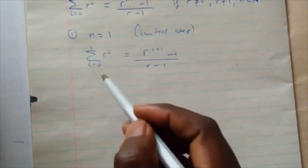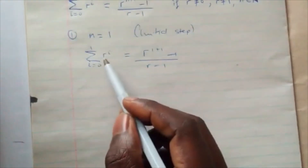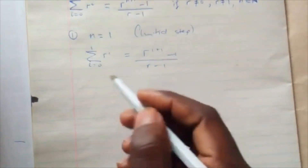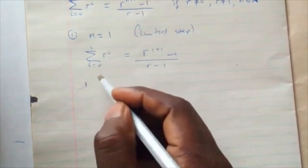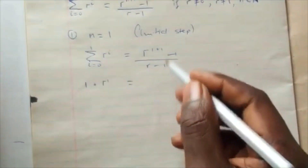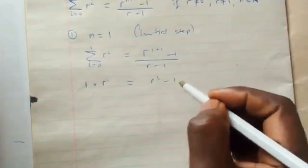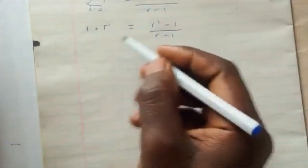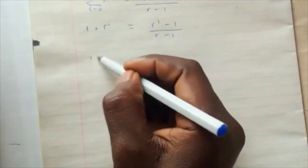The summation of r^i from i equals zero to one: first we plug in r^0 which is one, then plus r^1 which is r. On the right hand side we have r² minus one over r minus one. Simplifying the left hand side, it's already simplified, which is one plus r.